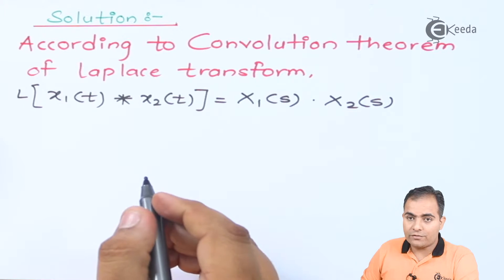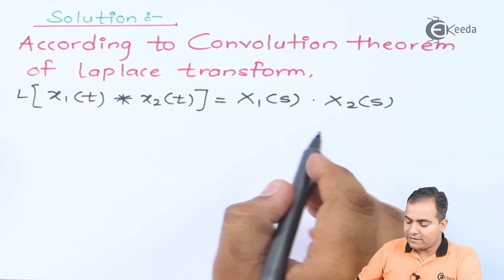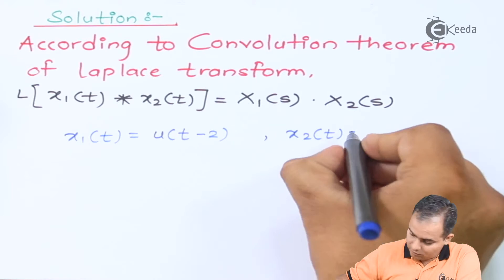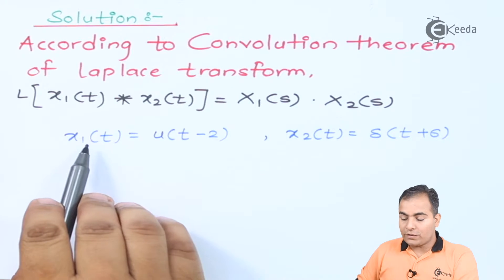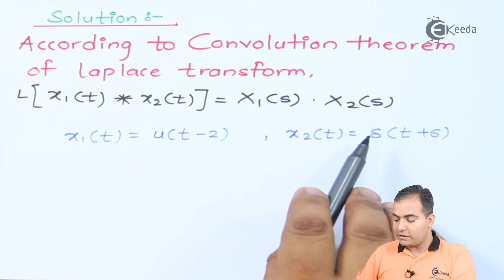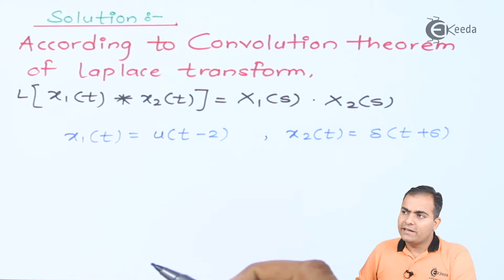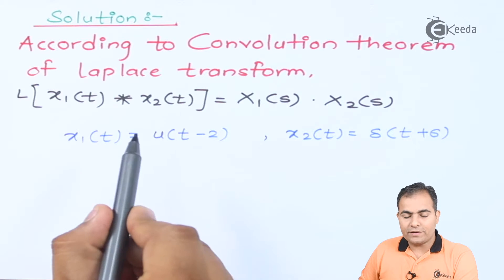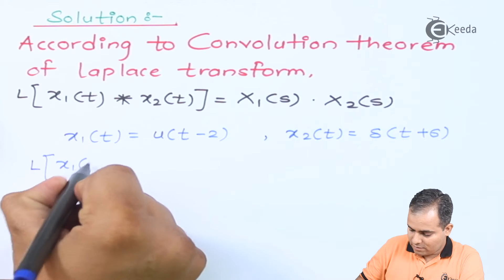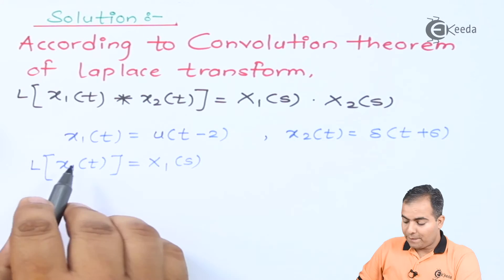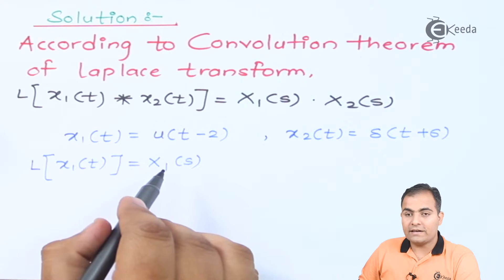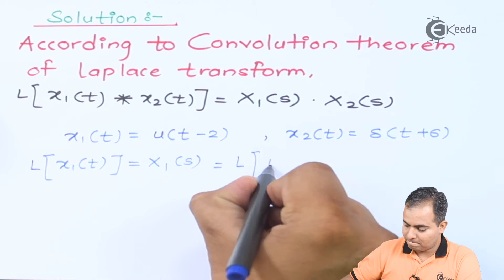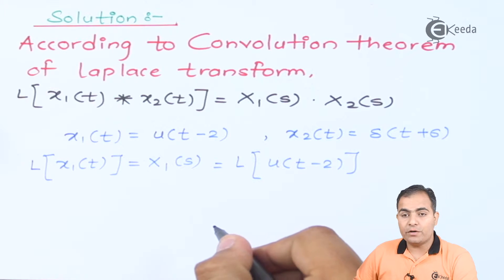We are going to find the Laplace transform of both functions separately. x1(t) is u(t-2) and x2(t) is δ(t+6). The Laplace transform of x1(t) is represented in the Laplace domain by X1(s), and it is the Laplace transform of u(t-2).